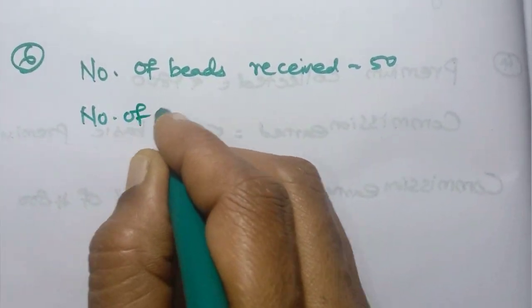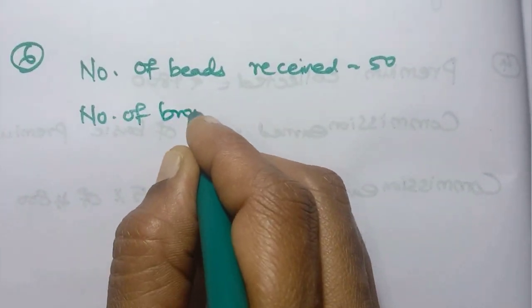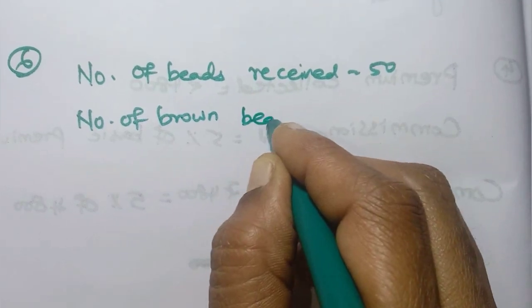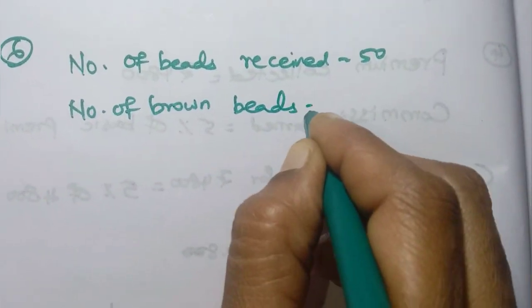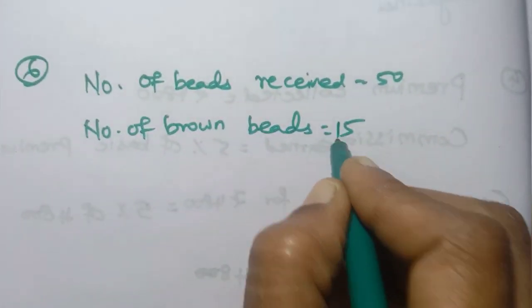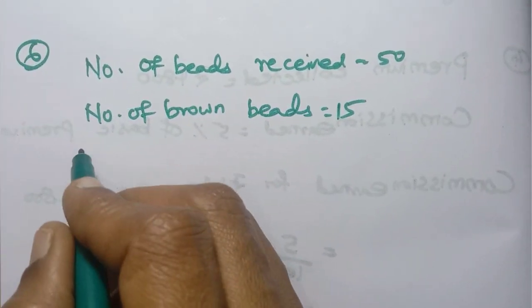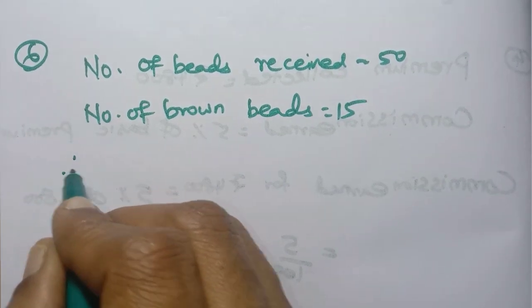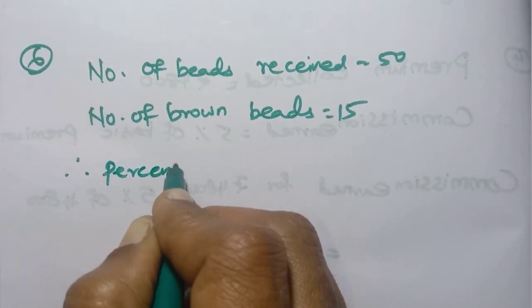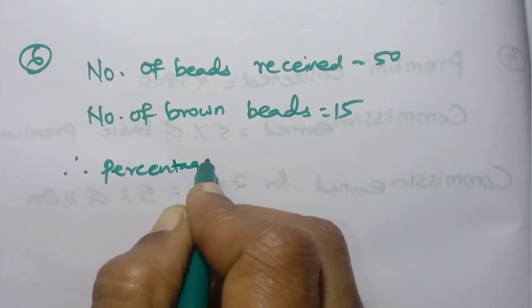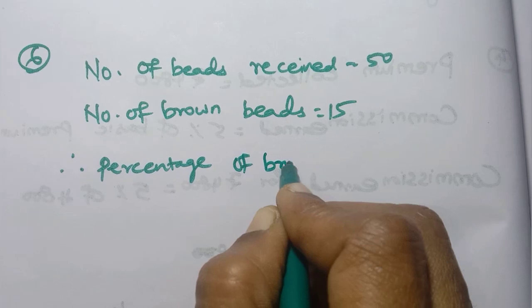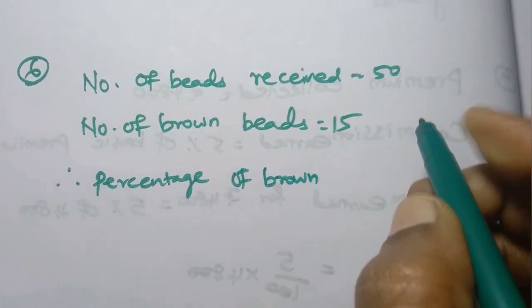Number of beads received: 50. Number of brown beads: 15. Therefore, we need to find the percentage of brown beads.